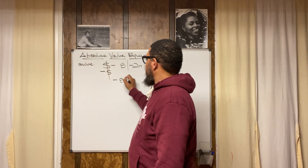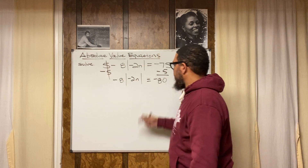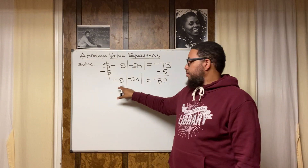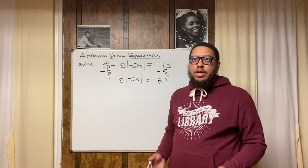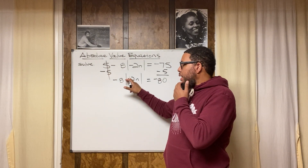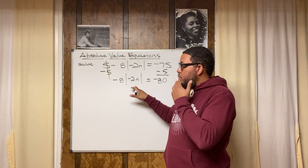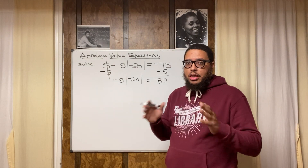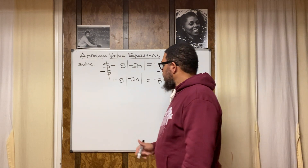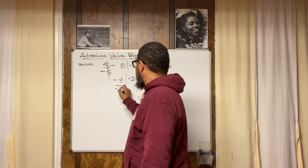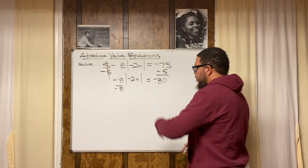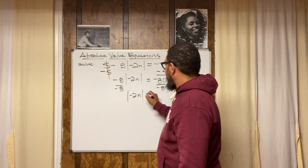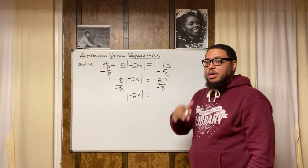I got rid of one thing. Now I still need to get rid of this negative 8. This negative 8 is being multiplied by the absolute value, so the opposite of multiplication is division. I'm going to divide by negative 8 on the left side, and divide by negative 8 on the right side. Negative 80 divided by negative 8 gives me positive 10.